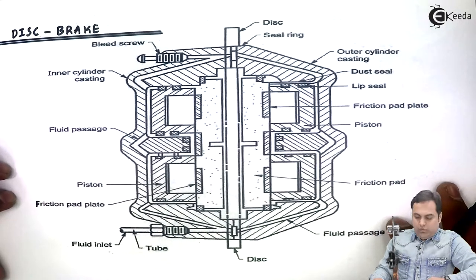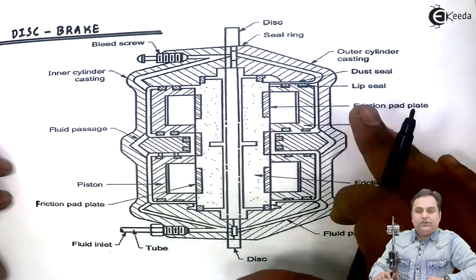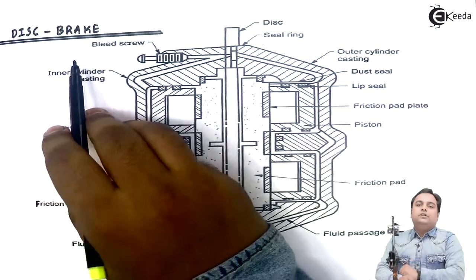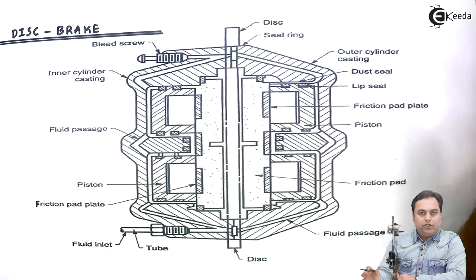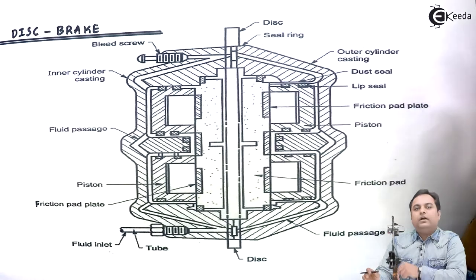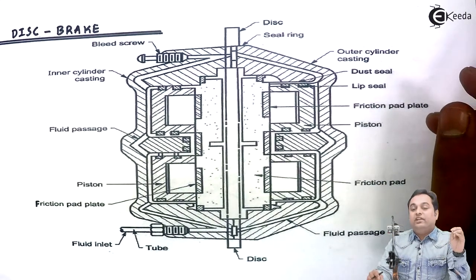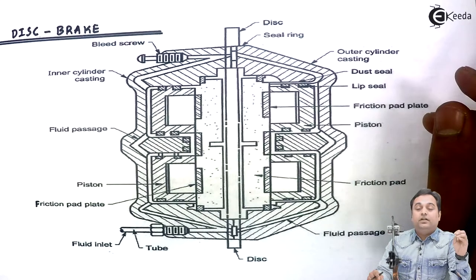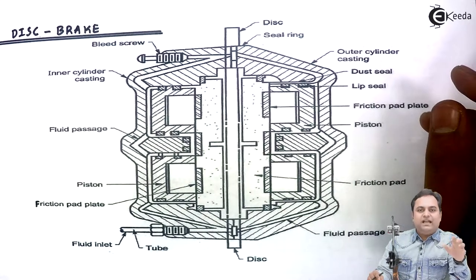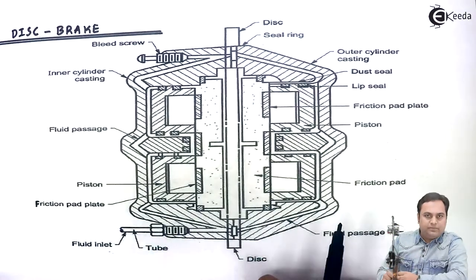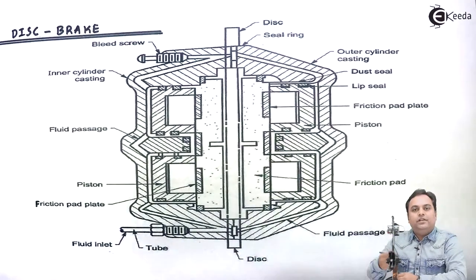In this video we are going to see the construction and working of disc brakes. Disc brakes are lighter in weight and are used in place of drum brakes because the cooling action is more — the brake cools off very easily in case of disc brake.